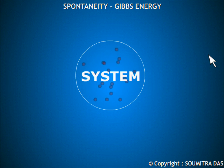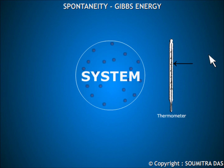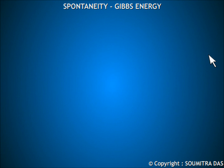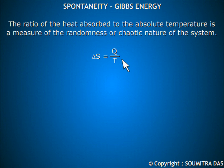This randomness or chaotic nature of the system depends on the heat absorbed by the system and also the temperature at which the heat is absorbed. The ratio of heat absorbed to the absolute temperature is a measure of the randomness or chaotic nature of the system. This actually reflects the change in entropy of the system.